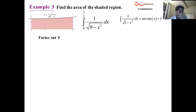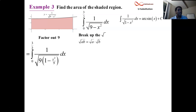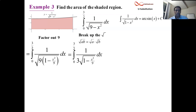If I take a 9 out, I'll be left with a 1, but it'll be minus x squared over 9. I am underneath the radical, so I'm going to break that radical up — it's a product, and the square root of a product is the product of the square roots. It doesn't work for plus, please don't do that for plus, but for multiplication and division you can. So the square root of 9 is 3, and then we have the square root of 1 minus x squared over 9. We're just doing algebra right now, there's no calculus yet.